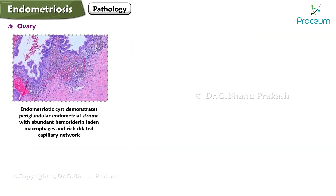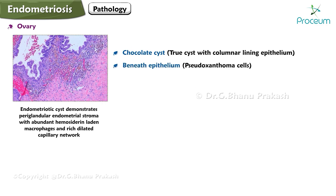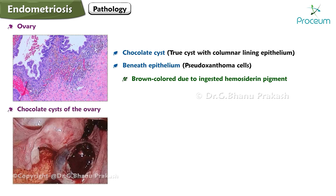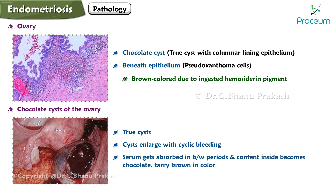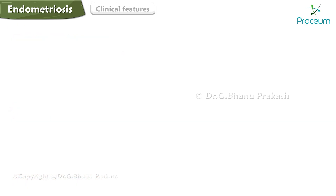The peritoneal cavity contains yellowish-brown fluid rich in prostaglandins, which is responsible for the pain of endometriosis. Ovarian chocolate cysts are true cysts with columnar lining epithelium. Beneath the epithelium are pseudoxanthoma cells, which are brown colored due to ingested haemosiderin pigment. The cysts enlarge with cyclic bleeding; the serum gets absorbed between periods and the contents become chocolatey brown.